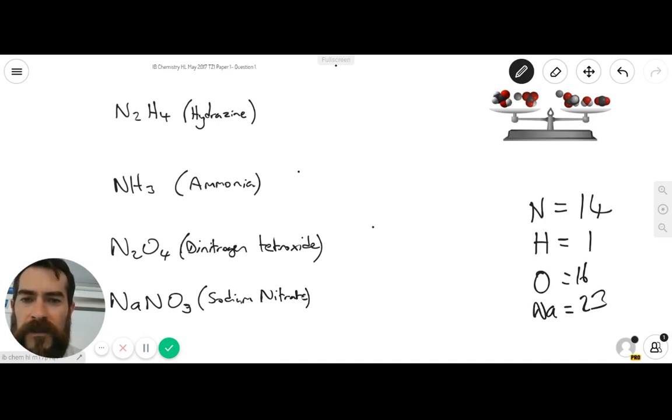So in the first question, we have two nitrogens, so that's 2 times 14, plus the four hydrogens, so that's 4 times 1, and that will give you a total mass for that compound there of 32. So with the two nitrogens, that's a total mass of 28 over the compound's mass of 32.